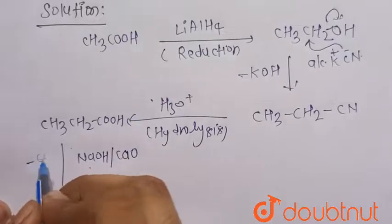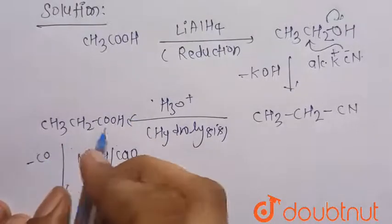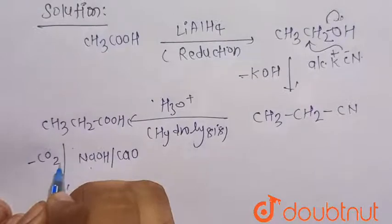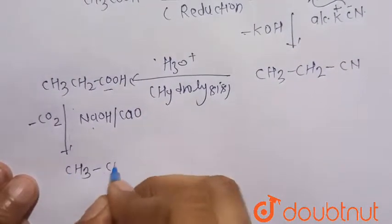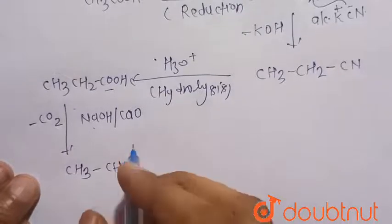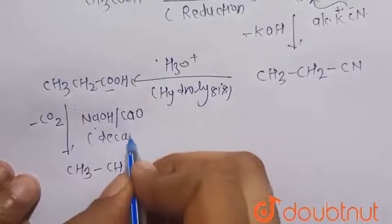In Kolbe electrolysis or the decarboxylation reaction, CO2 is removed. So there is formation of ethane, that is CH3CH3, this is the decarboxylation.